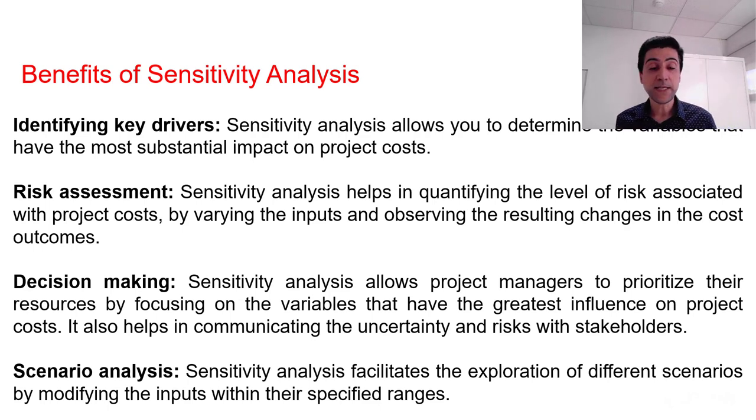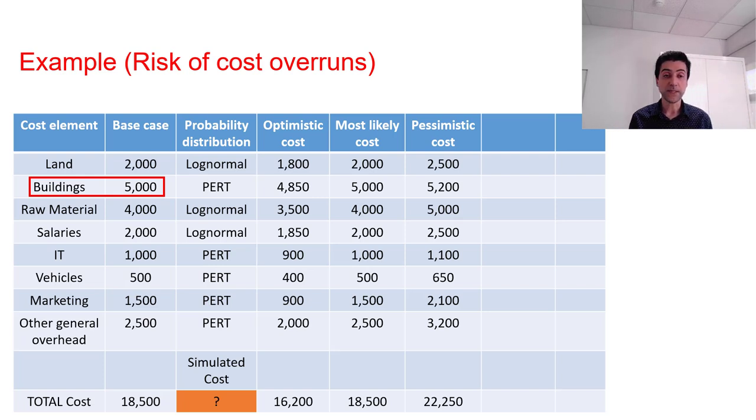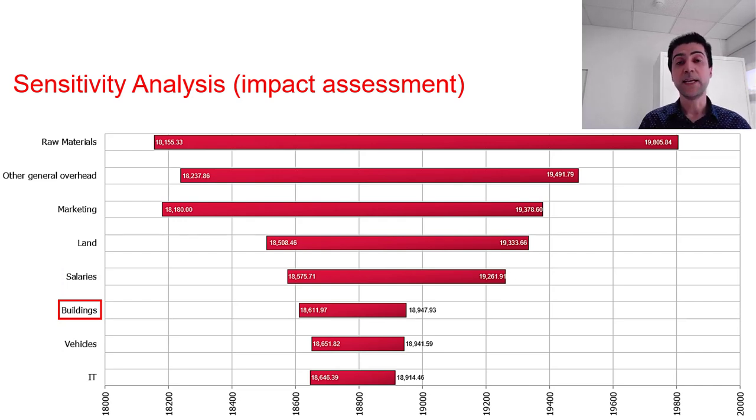Back to our example, in the first attempt in our table, we saw that building is the largest cost center with the base case of 5,000. In a naive approach, we can consider that as the most impactful item in terms of total cost. But when we do the sensitivity analysis, we can truly find out which variable is the most impactful in terms of introducing variance to the output. And it is not the building which is the biggest cost center. In our example, raw material is appearing to be a very sensitive and impactful input variable. In other words, our total cost is most sensitive to variations in raw materials.